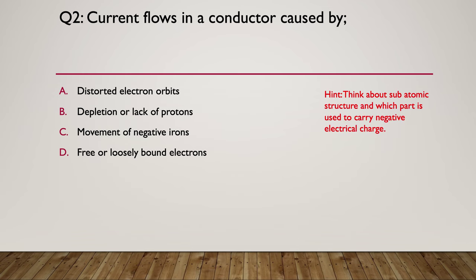Here's your hint. Think about the subatomic structure and which part is used to carry the negative electrical charge. So the answer in this particular case is D, free or loosely bound electrons. Those are the electrons that are in the far outer orbits that are found in most metals or anything that is a good conductor. Has these electrons that are well, well away from the centre of the atom, making them good conductors.